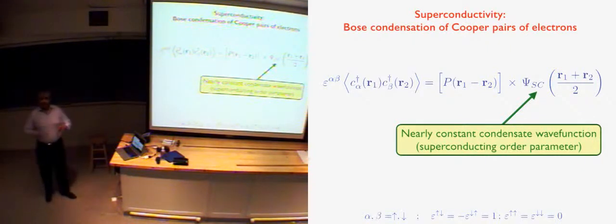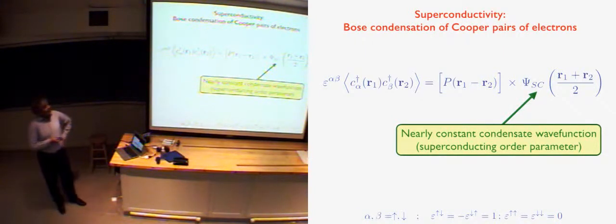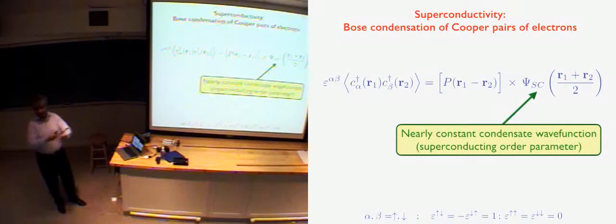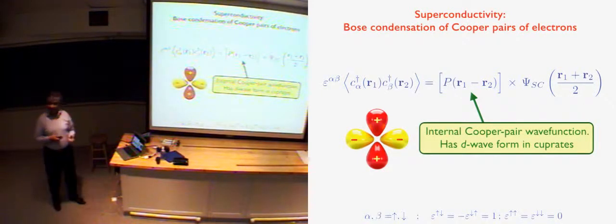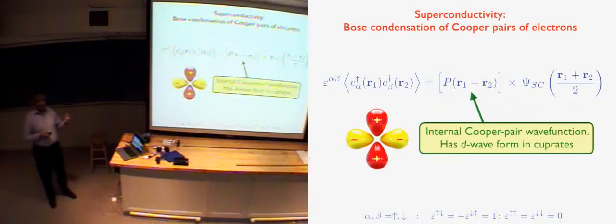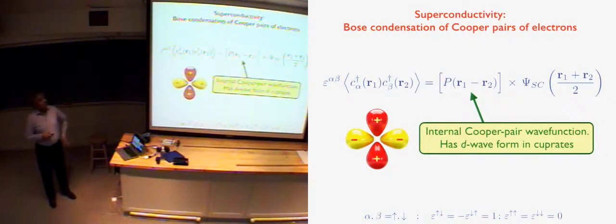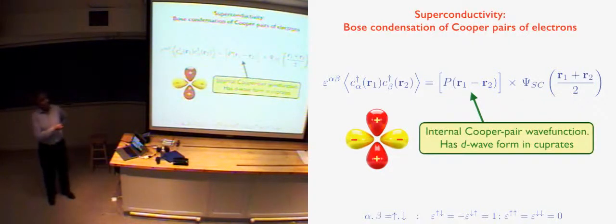What we're often interested in is the so-called pair wave function, which depends on the internal coordinates — the relative coordinate of the two electrons. What are they doing relative to each other while the pair is condensing? What we know is that this internal wave function has a D symmetry. That's a highly non-trivial fact which is universally true in all of the copper-based superconductors. It tells us something about the origin of superconductivity. All the old previous superconductors — the BCS, the low-TC superconductors — had an S wave function.